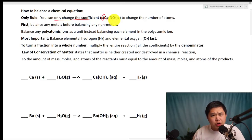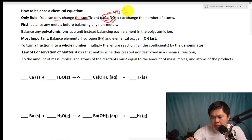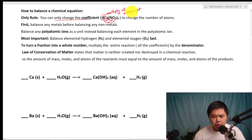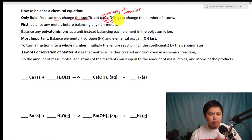What's so special about a coefficient? When we change the coefficient, the coefficient multiplies to all the subscripts. So by changing the coefficient, you change the number of atoms for each element by multiplying it. That's the only rule you really need to follow when we want to balance chemical equations.